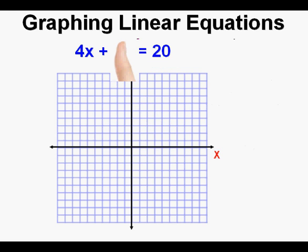We solve for the x-intercept by covering up the y-term — I like using my thumb. With the thumb covering the y-term, we have 4x equals 20. We calculate x by dividing both sides by the coefficient of x, which is 4, so the x-intercept is 5. We mark the point on the x-axis.